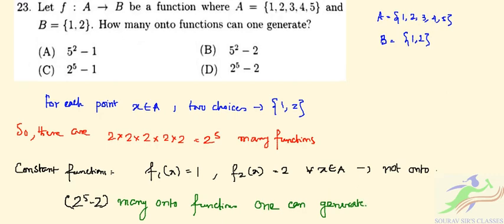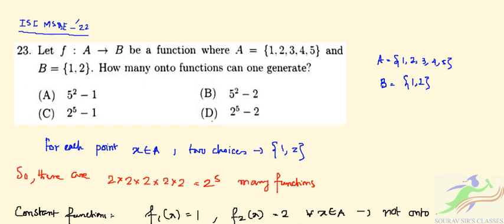In our case, the correct option will be option D which is the correct option. So for question 23 the correct option is D, 2 to the power of 5 minus 2.